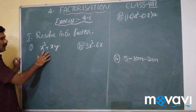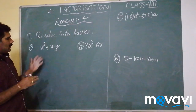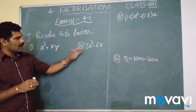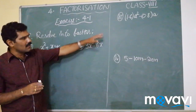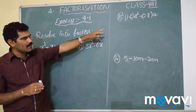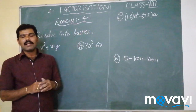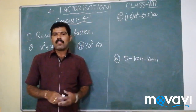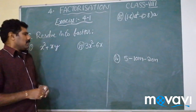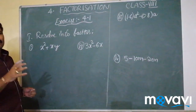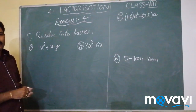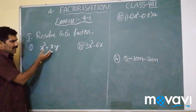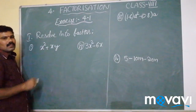The first problem is: we need to factorize x² + xy, 3x² - 6x, 1.6a² - 0.8a, and 5 - 10m - 20n. For this, the basic point we need is to separate the common factors in the terms.